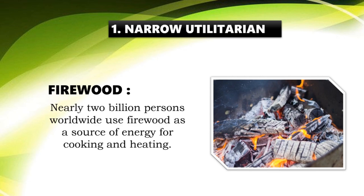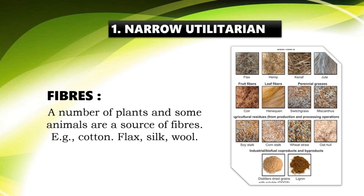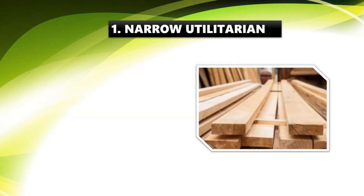About 2 billion people use biodiversity as a source of energy for cooking and heating. There are many types of fibers we use. A number of plants and animals are sources of fibers: cotton, flax, silk, wool — and we also use animal skin.